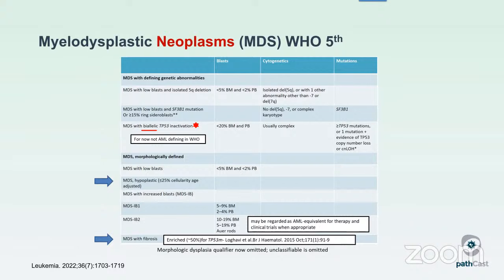The next category is MDS with biallelic TP53 inactivation, meaning you have an alteration in both copies of your TP53, either by multiple mutations, mutation and copy number loss with deletion of the wild type allele, or copy neutral loss of heterozygosity. These cases typically have a complex karyotype. You cannot have more than 20% blasts. If you don't have any of these three genetic categories, you revert to morphologically defined categories: MDS with low blasts if less than 2% in blood and 5% in bone marrow, or hypoplastic MDS if cellularity is less than 25% adjusted for age — recognized by WHO but not ICC.